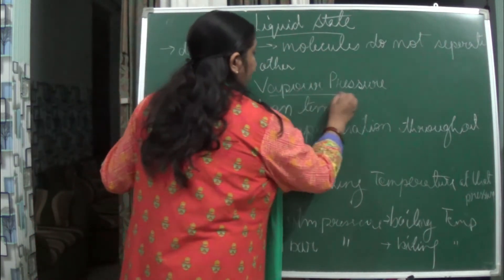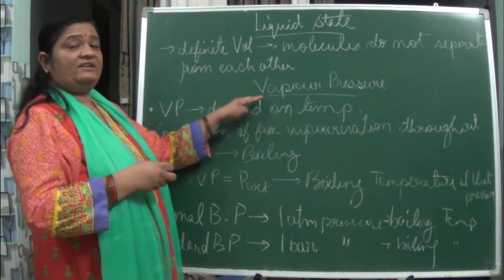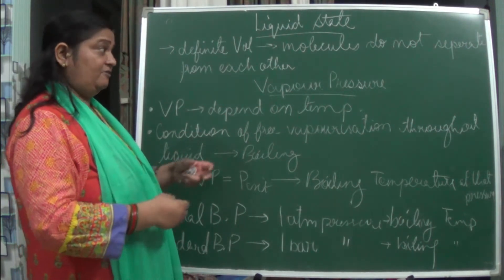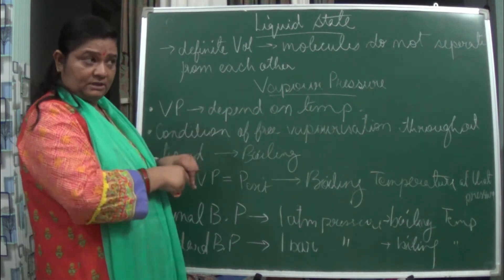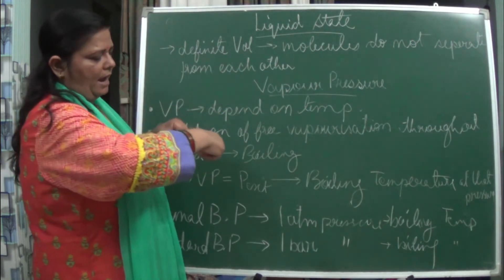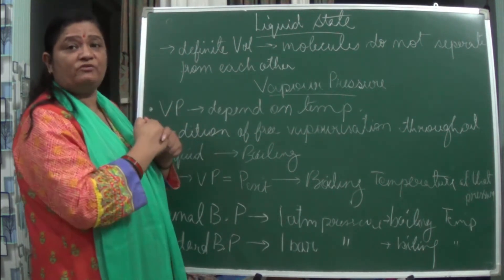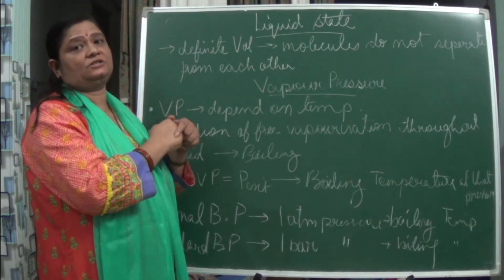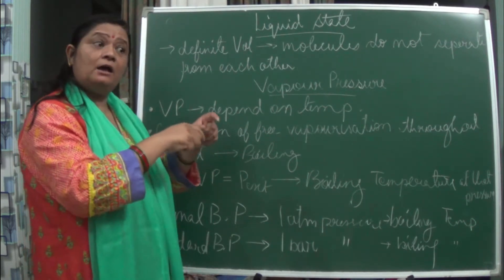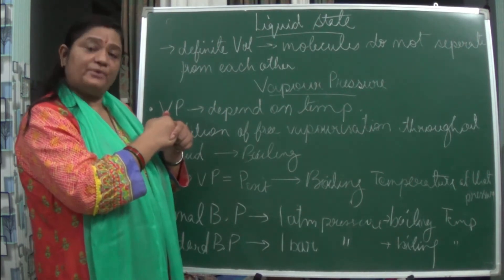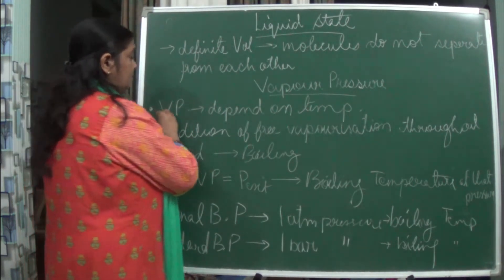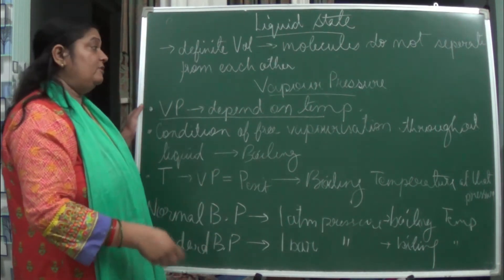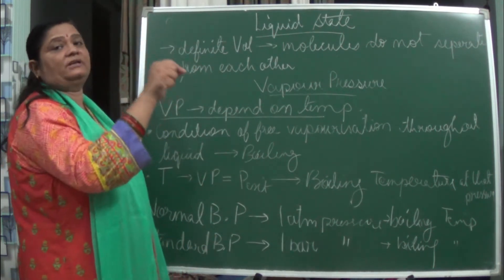Now, vapor pressure. In the Thomas Andrews graph of liquefaction of gases of carbon dioxide, we studied that at a specific temperature and volume area, it exists in both liquid form and gaseous form. Where it exists as the gaseous form it is known as vapors, and the pressure exerted by these vapors is known as vapor pressure. Vapor pressure depends on temperature.